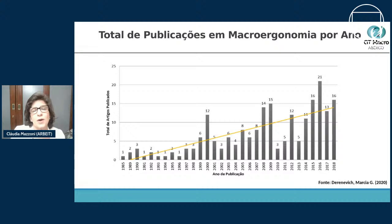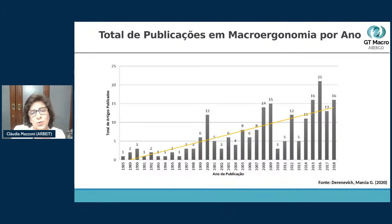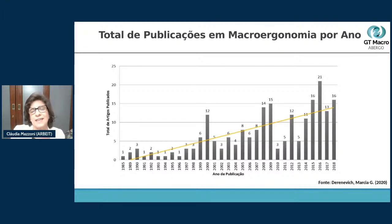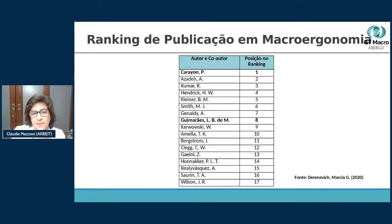Em termos de publicações de macroergonomia ao longo do tempo, desde 1985 até 2018, a gente vai vendo uma tendência de crescimento. A metodologia ainda não é usada de forma muito intensa, mas existem vários artigos e estudos levando em consideração a macroergonomia. Isso pode ser pelo fato de cada vez mais a gente ter que entender os processos de trabalho com uma visão sociotécnica, que traz uma possibilidade de sustentabilidade dos processos de produção.